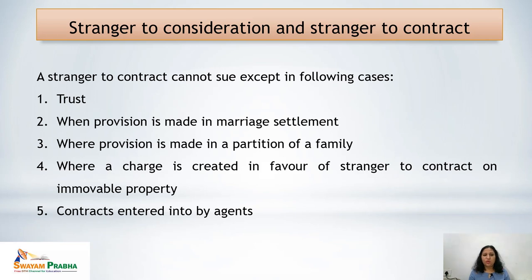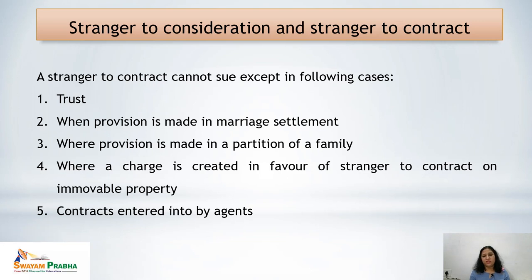Now we discuss the concept of stranger to consideration and stranger to contract. In India, the promisor, promisee, or any other person can sue for consideration. But according to English law, a stranger to consideration cannot sue, as discussed in Chinaya versus Ramaya. A stranger to contract is any person who is not a party to the contract. A stranger to contract generally cannot sue, except in certain cases.